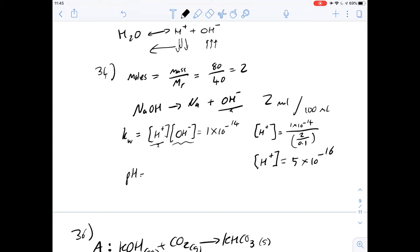Now let's work out the pH, which is minus log of the hydrogen ions. The pH therefore is 15.3. Because the answer is greater than 15, we know the answer for number 34 is D.